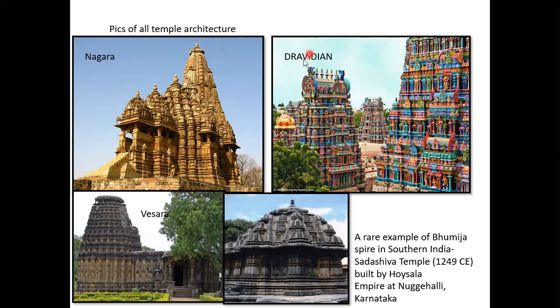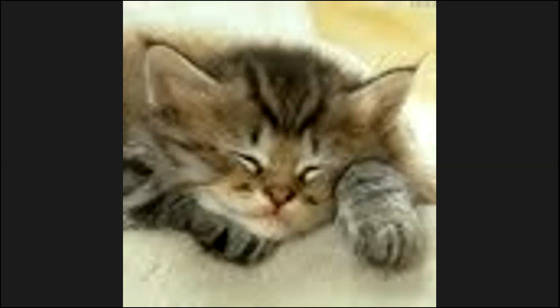To summarize: Nagara style is North India, Dravidian style is South India, Vesara style is a combination of Nagara and Dravidian found in Madhya Pradesh and Maharashtra, and Bhumija style is from Madhya Pradesh and Maharashtra. So students, this video we will stop here. We have completed up to temple architecture and types of temple architecture. We will be continuing with the next style of temple architecture related to Maharashtra — that is the Hemadpanti style of temple architecture. Thank you, children.